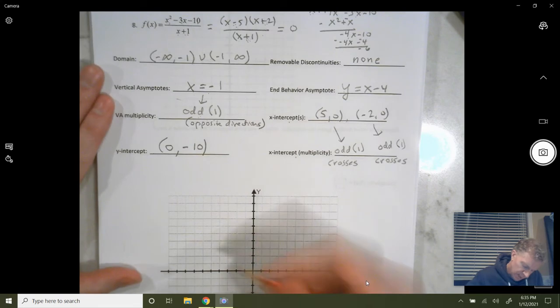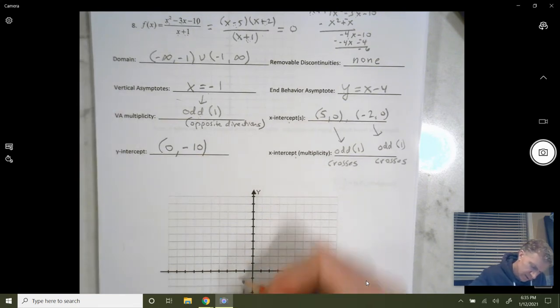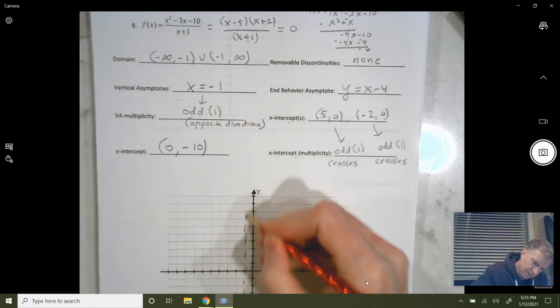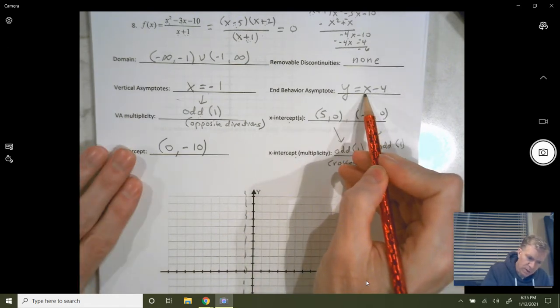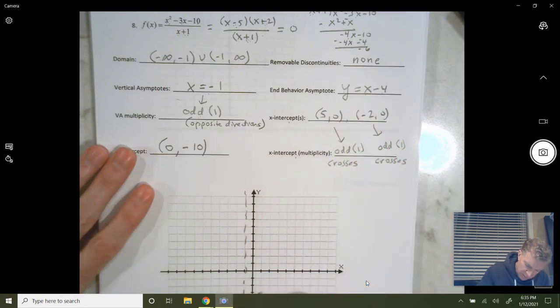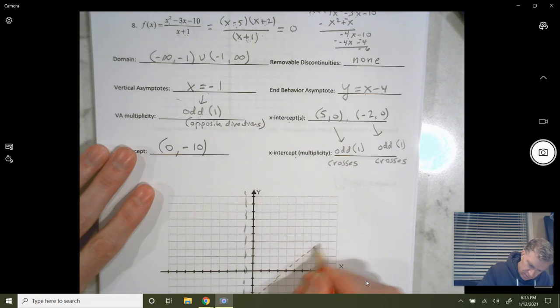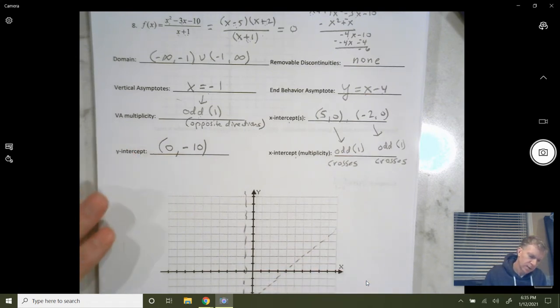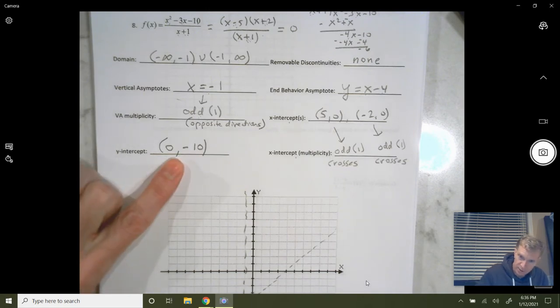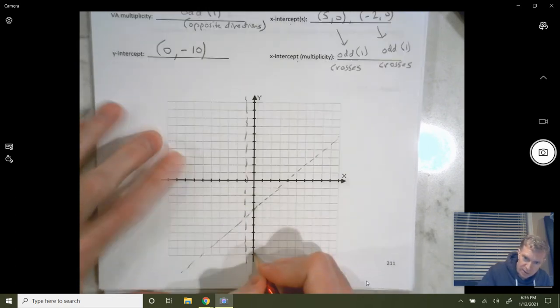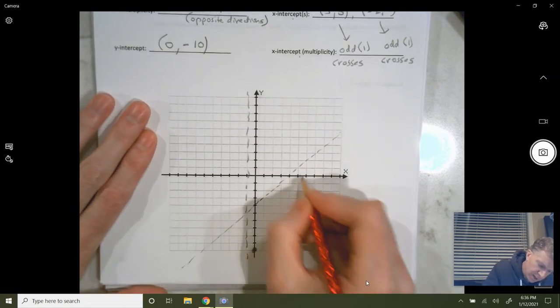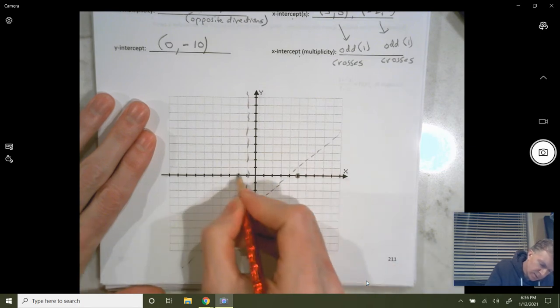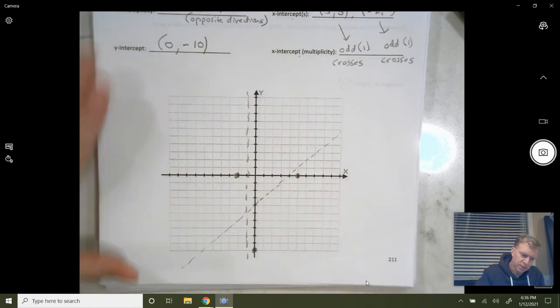Let's graph. I like to graph the asymptotes first. x equals negative 1. There's no horizontal asymptotes, but there's an oblique asymptote. Slope of 1, y intercept of negative 4. Okay. Let's plot our intercepts. The y-intercept is 0, negative 10. All the way down here at the bottom. x-intercepts are 5, 0, and negative 2, 0.